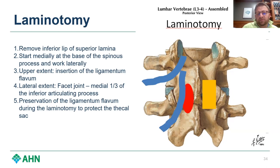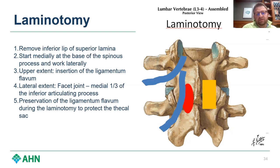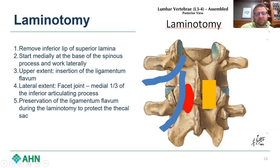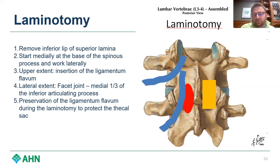When we talk about a laminotomy versus laminectomy — laminectomy is complete removal of the lamina; laminotomy is a window into the spinal canal through a small opening. In a laminotomy, you're removing the inferior lip of the superior lamina. For an L3-4 laminotomy, that means removing the inferior aspect of the L3 lamina. Start medially at the base of the spinous process and work laterally. The upper extent is the insertion of ligamentum flavum, about two-thirds up the lamina. The lateral extent is the facet joints — take no more than a medial third of the inferior articulating process. You can use a drill and preserve the ligament below to protect the thecal sac during surgery.